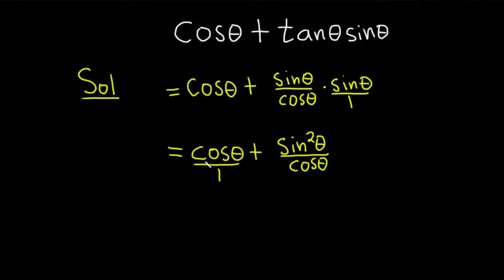So what we can do is multiply this by cosine theta over cosine theta. This is just multiplying by one in a clever way, and this is plus sine squared theta over cosine theta.